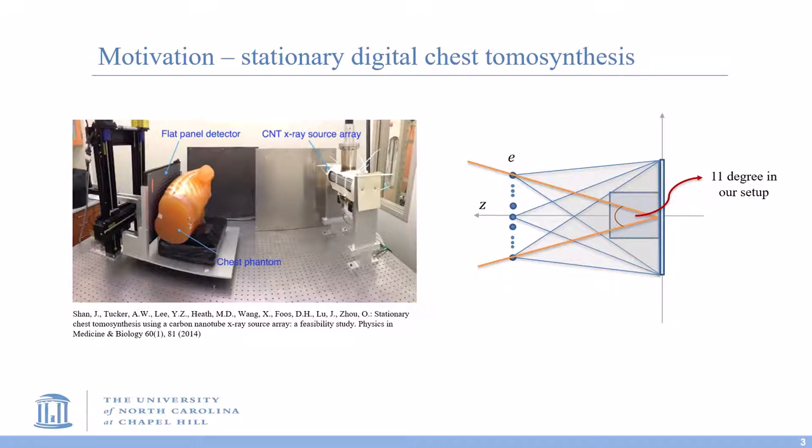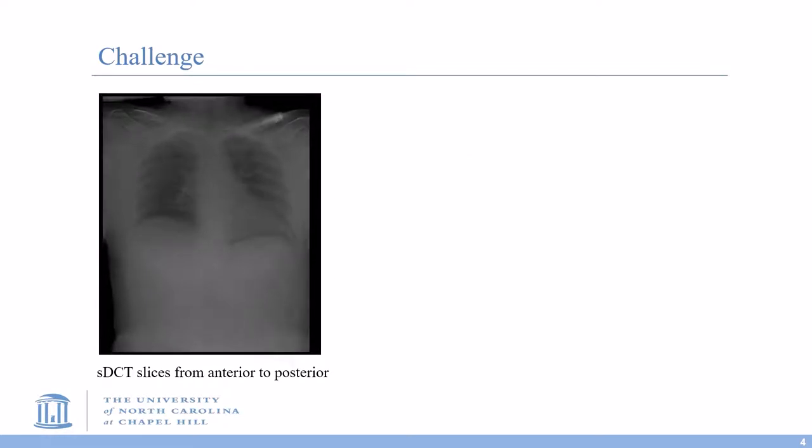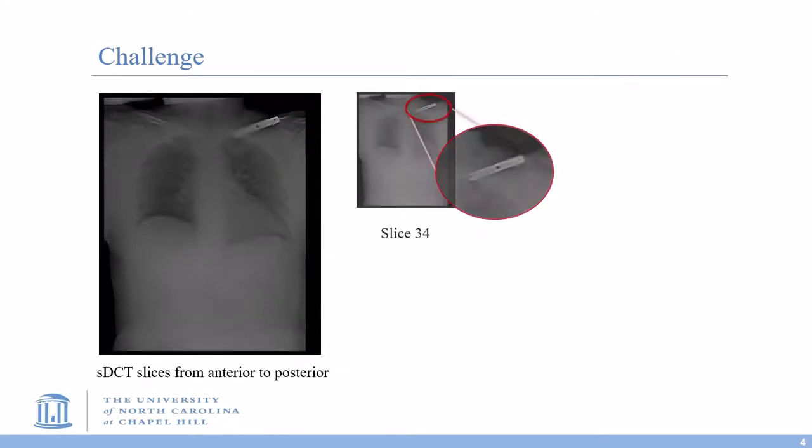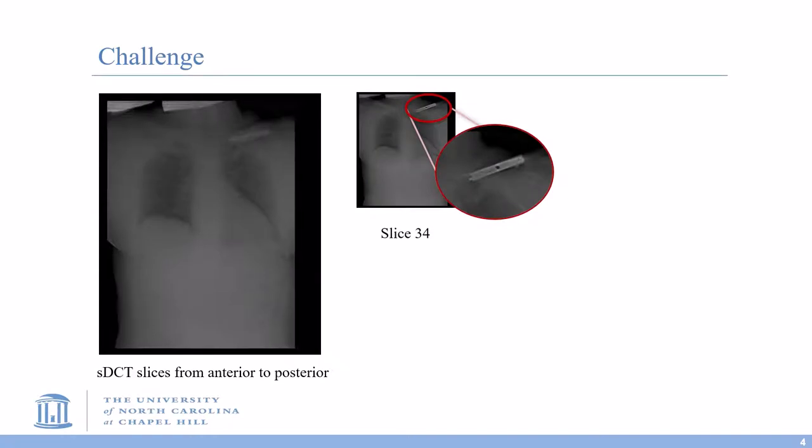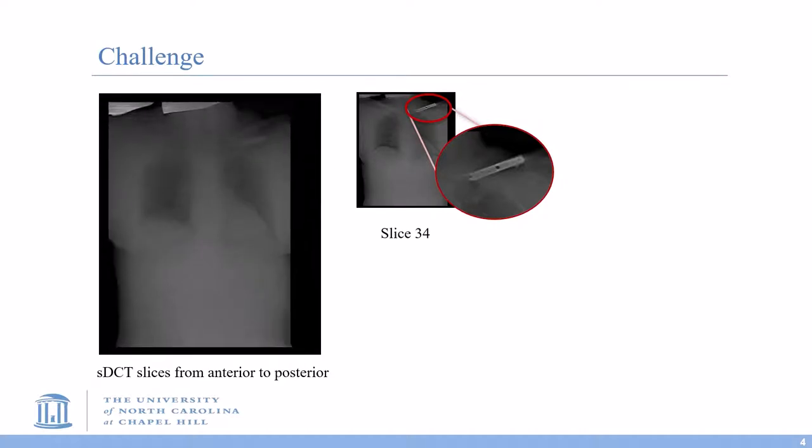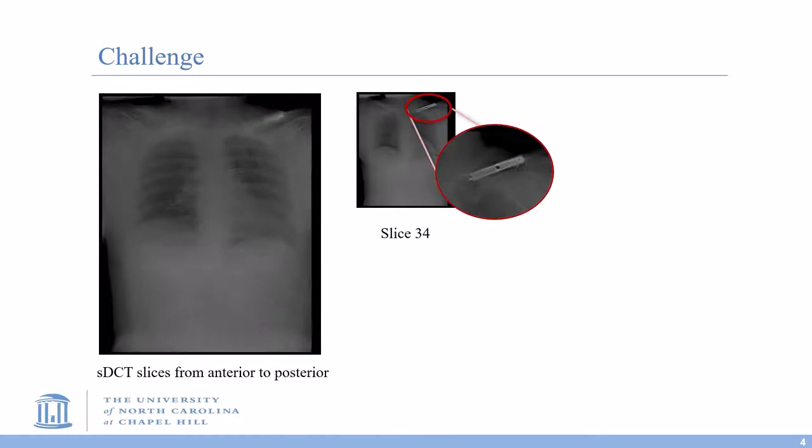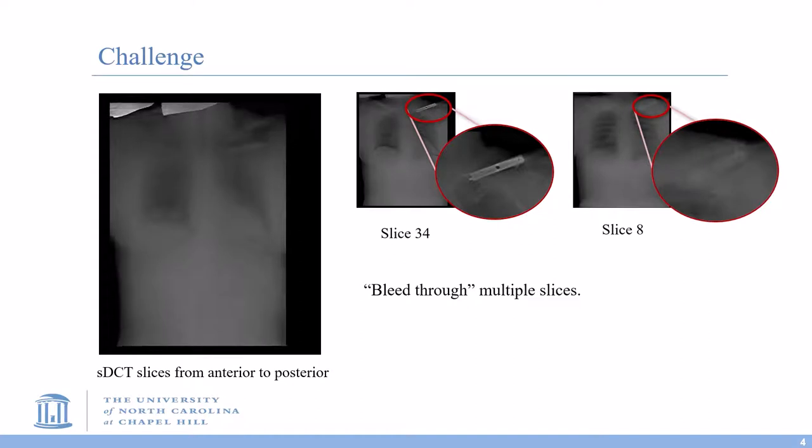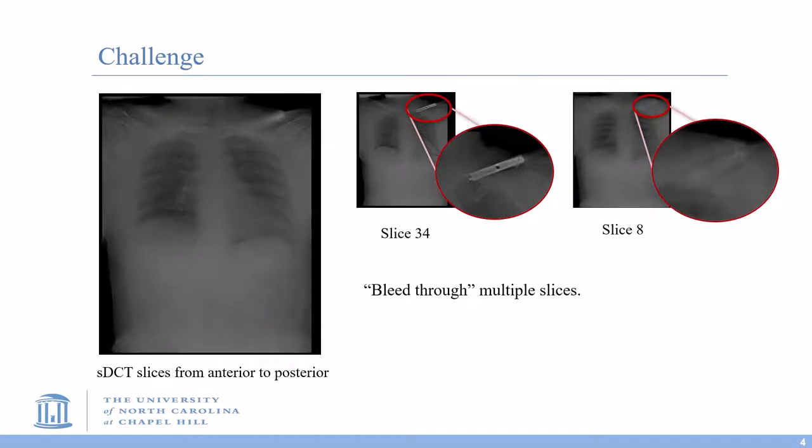What makes this registration task challenging is the bleed-through effect in this modality. The left animation shows sDCT slices from anterior to posterior. If we zoom in, we can see that the metal in the upper shoulder at slice 34 looks sharper than the surrounding structures, which indicates that this metal is physically located at this slice. However, we can also observe the metal in multiple slices, such as slice 8. This is what we call the bleed-through effect.